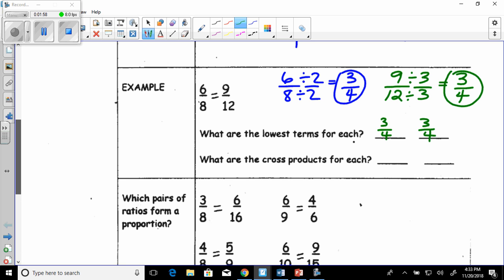Now if I wanted to find the cross products of each one, what you would do is you would take the cross products and then you would multiply. So 8 times 9 is 72. And then I'm going to use a different color here and do 6 times 12, which is also 72. And if the two numbers are the same, then they are proportional.